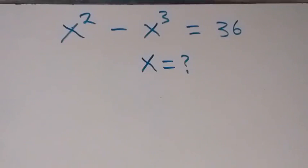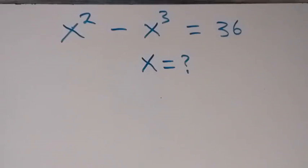Hello and welcome. How to solve this nice math problem? We have x squared minus x cubed equals 36.